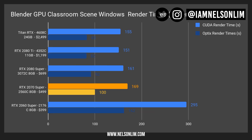Let's take a look at the Blender GPU classroom results. With GPUs and rendering in Blender, it seems that the RTX 2070 Super really hits a very good sweet spot — 169 seconds for CUDA render times and 100 seconds for OptiX render times. Those are very similar render times compared to the 2080 Super, which is about $200 more. The 2080 Ti is only about 20 seconds less in each case. So if you use Blender GPU a lot, definitely consider the 2070 Super.